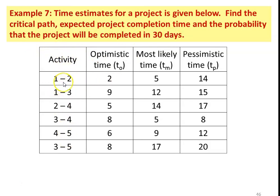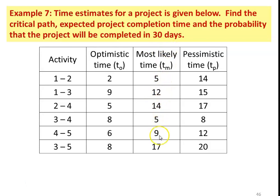There are 6 activities: 1 to 2, 1 to 3, 2 to 4, 3 to 4, 4 to 5, and 3 to 5. The optimistic times are 2, 9, 5, 8, 6, 8. The most likely times are 5, 12, 14, 5, 9, 17. The pessimistic times are 14, 15, 17, 8, 12, and 20.